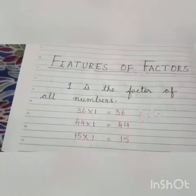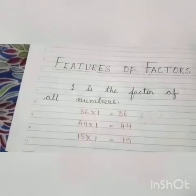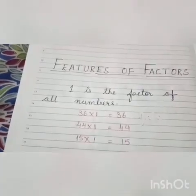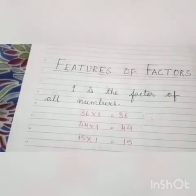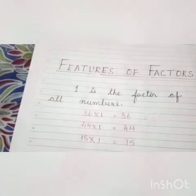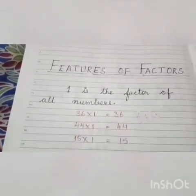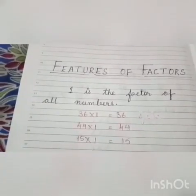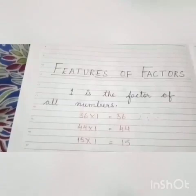Children, features of factors, that is characteristics of factors. So you can see that 36 ones are 36, 44 ones are 44, 15 ones are 15. So you can see here that 1 is common in all the numbers.